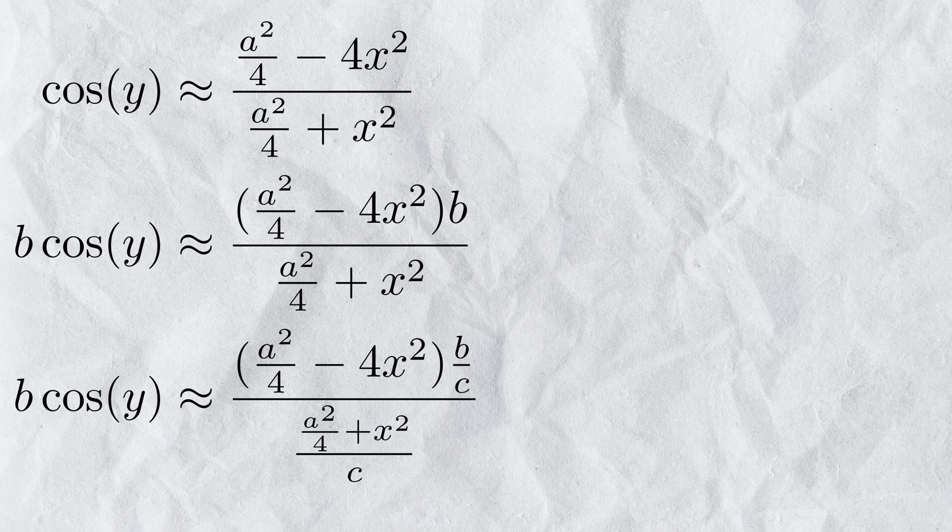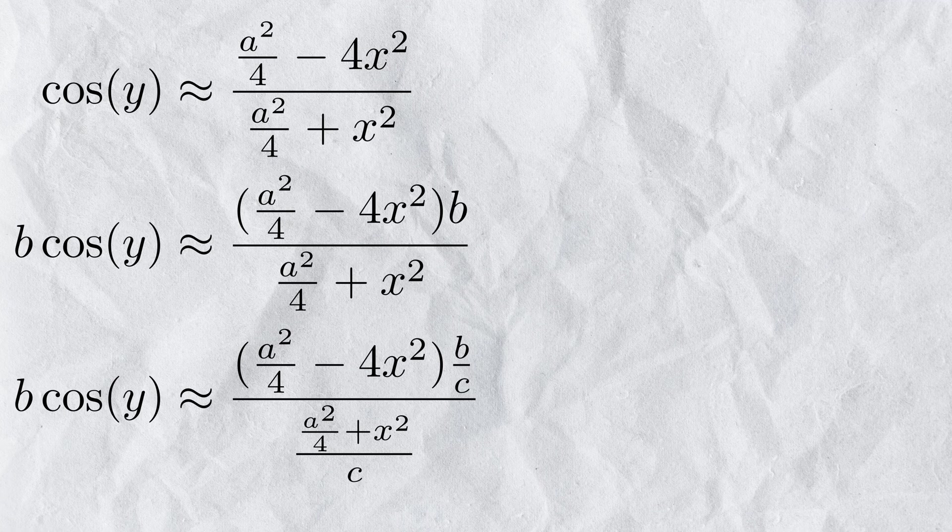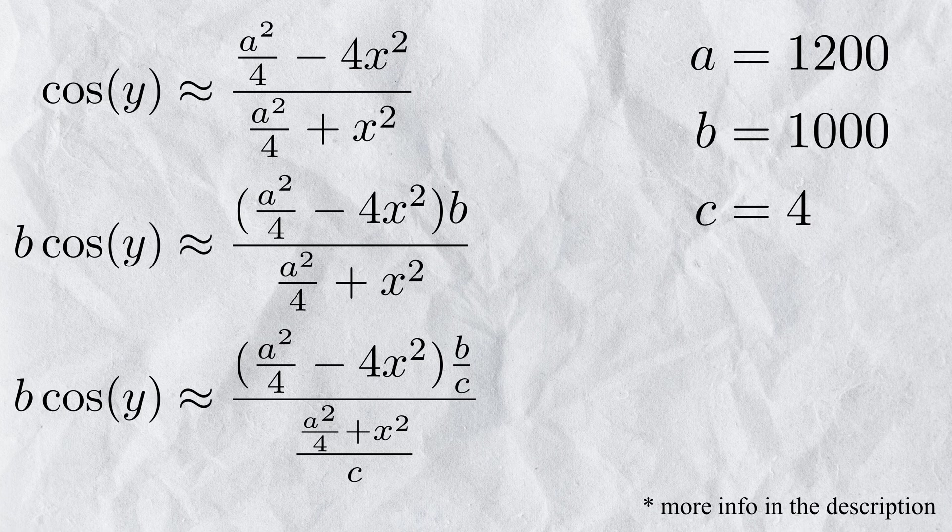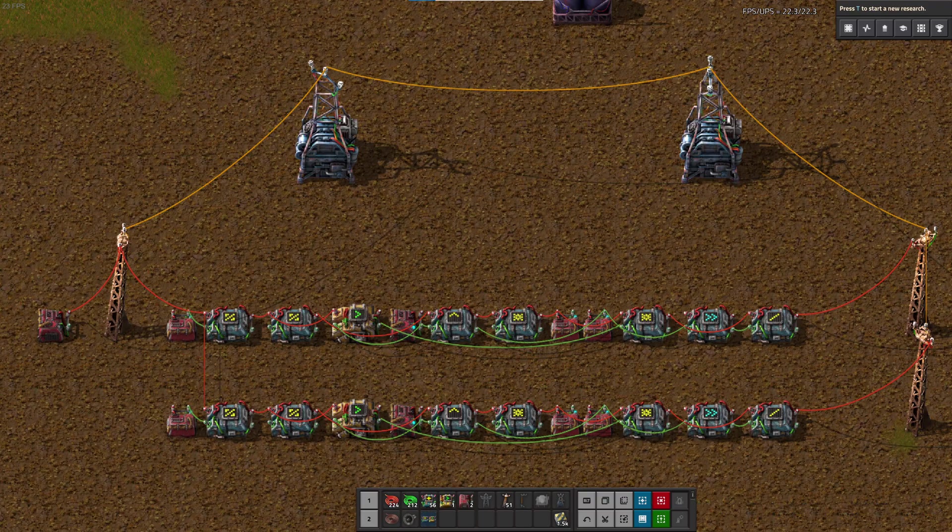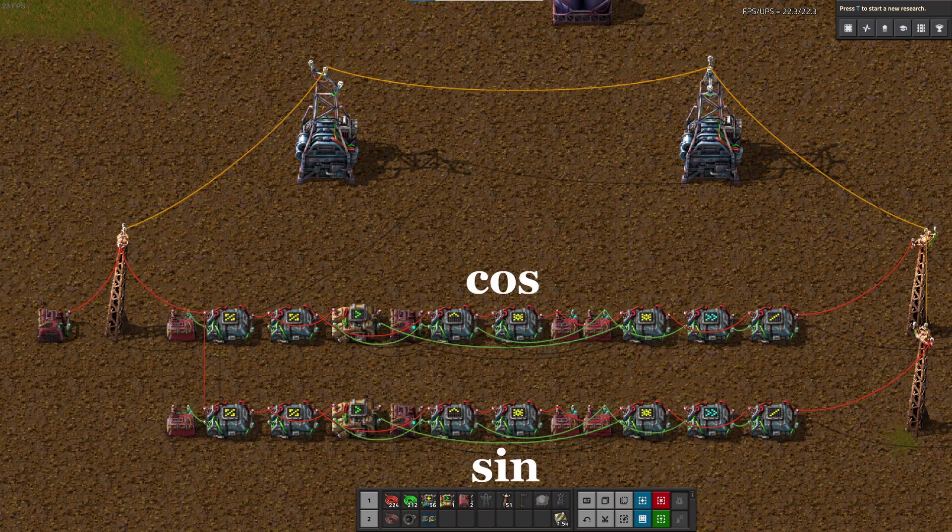For version 1 of Factorio I use the following values. A equals 1200, B equals 1000, C equals 4. When implemented in Factorio you get this.